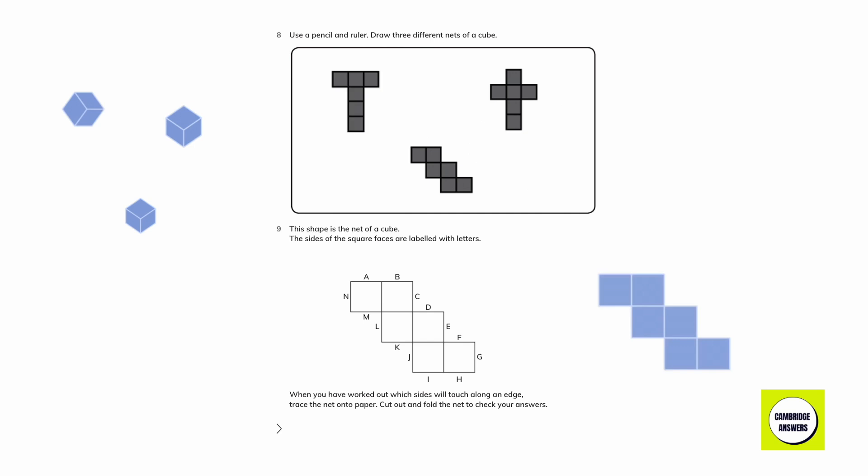This shape is the net of a cube. The sides of the square faces are labeled with letters. When the net is folded to make a cube, which sides will touch along the edge? When you have worked out which sides will touch along the edge, trace the net onto paper. Cut it out and fold the net to check your answers.